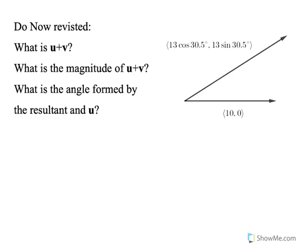That vector, this one down here, the horizontal one, in component form, it's 10, 0. Magnitude of 10, and it's horizontal.